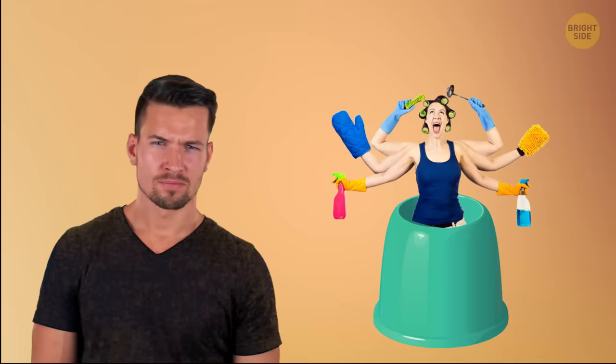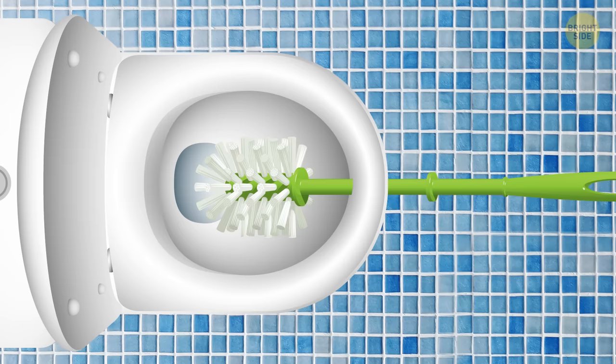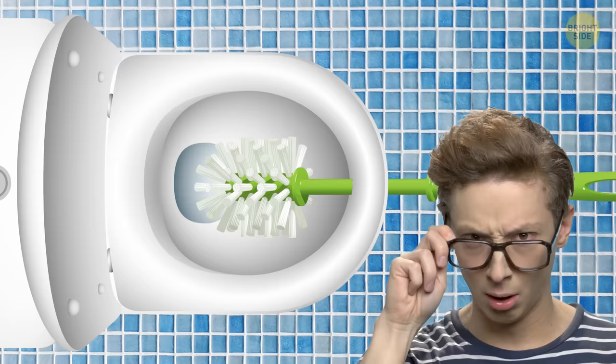Of course, doing it every time after you've done your business seems like a real hassle. But try to do it at least twice a month. And here's a useful tip. When you're done using it, place the handle of the brush under the seat with the head hanging over the bowl. That way, it can drip dry right into the water, but the seat will keep it from falling in. That's clever.